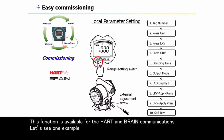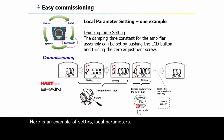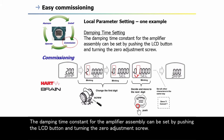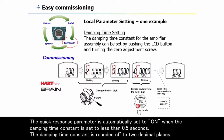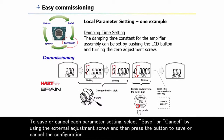Here is an example of setting local parameters. The damping time constant for the amplifier assembly can be set by pushing the LCD button and turning the zero adjustment screw. The quick response parameter is automatically set to ON when the damping time constant is set to less than 0.5 seconds. The damping time constant is rounded off to two decimal places. To save or cancel each parameter setting, select SAVE or CANCEL using the external adjustment screw, then press the button to save or cancel the configuration.